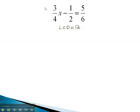So we will multiply each fraction by 12, each term by 12. As we do, those 12s will reduce with each of those denominators. 12 over 4 reduces to 3, 12 over 2 reduces to 6, and 12 over 6 reduces to 2.